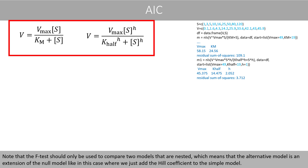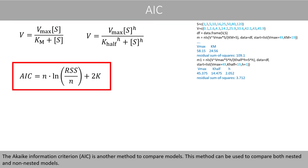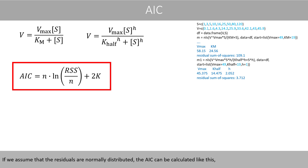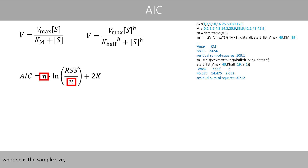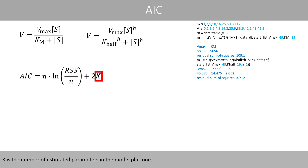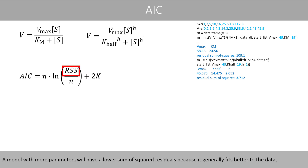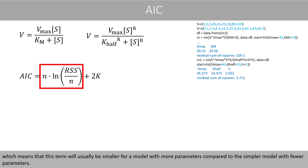The Akaike information criterion, or the AIC, is another method to compare models. This method can be used to compare both nested and non-nested models. If we assume that the residuals are normally distributed, the AIC can be calculated with a formula where n is the sample size, this term is the sum of the squared residuals, and k is the number of estimated parameters in the model plus one. We will select the model which has the lowest AIC value. A model with more parameters will have a lower sum of squared residuals because it generally fits better to the data, which means that this term will usually be smaller for a model with more parameters compared to the simpler model with fewer parameters.